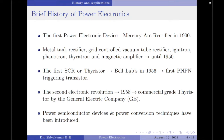Now let us have a small look at the brief history of power electronics. The first power electronic device developed was the mercury arc rectifier during the year 1900. Then other power devices like the metal tank rectifier, grid controlled vacuum tube rectifier, ignitron, phanatron, thyratron, and magnetic amplifier were developed and used gradually for power control applications until 1950. The first SCR or thyristor was invented and developed by Bell Labs in 1956, which was the first PNPN triggering transistor. The second electronic revolution began in the year 1958 with the development of the commercial grade thyristor by the General Electric Company.